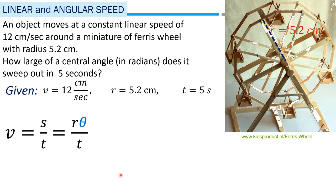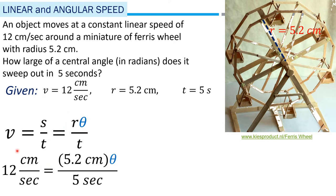We identify the given and note that we are looking for the central angle theta. From our past discussion about arc length, s equals radius times theta. Now we are referring to the distance s, but the formula does not change.